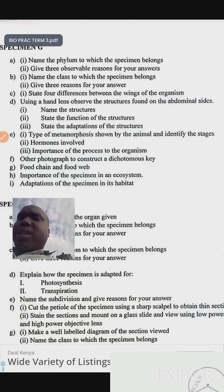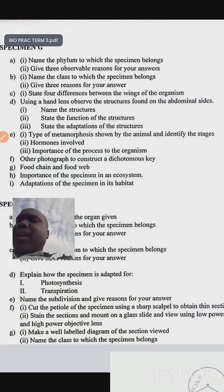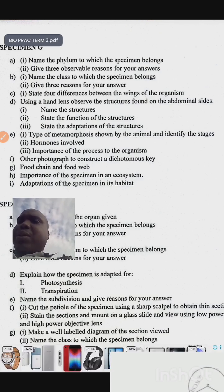Numbers E Roman one: type of metamorphosis. Study the type of metamorphosis by the animal and identify the stages, the stages, hormones involved, importance of the process to the organism.